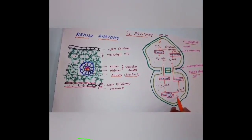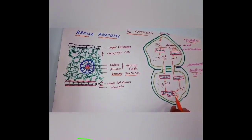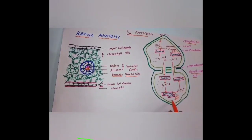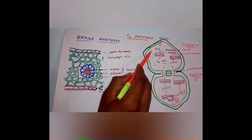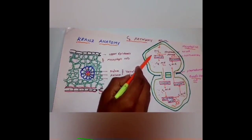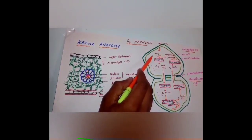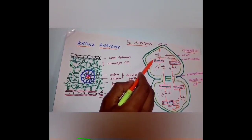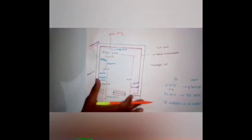The C4 acid is transported to the bundle sheath cells, and then loses one carbon dioxide. The C4 acid is converted into C3 acid again. This carbon dioxide participates in the Calvin cycle, and at the end of this Calvin cycle, starch is prepared. Atmospheric carbon dioxide is taken in the form of bicarbonate ions; hence, bundle sheath cells do not directly undergo formation of starch from atmospheric CO2.